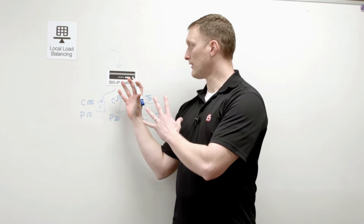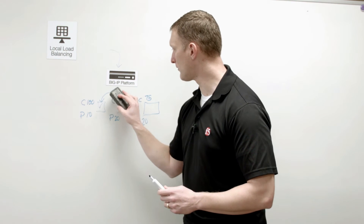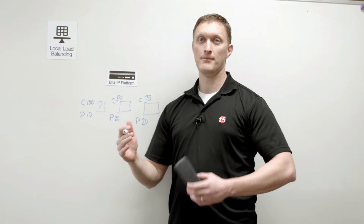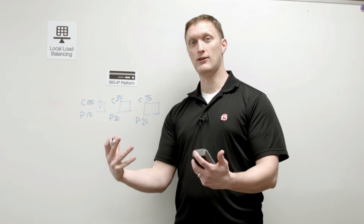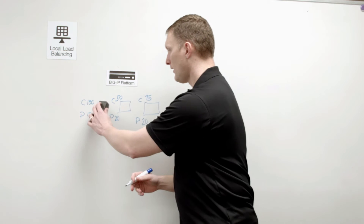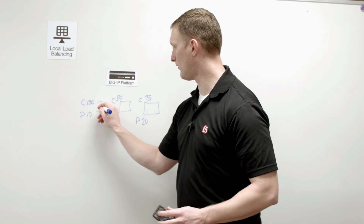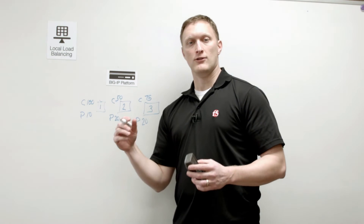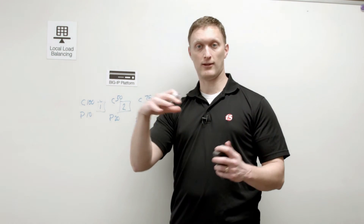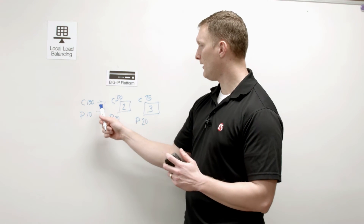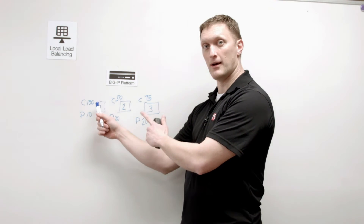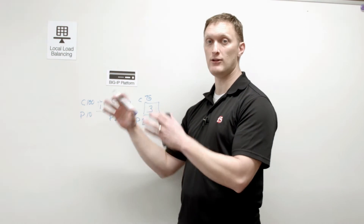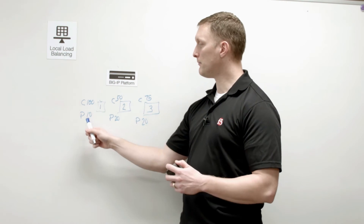So that's the least session load balancing algorithm. Now I'm going to erase this and we're going to look at ratio sessions. Ratio sessions is very similar to least sessions, except you need to put ratios on each of your servers. Let's keep it simple: one, two, and three. Much like the ratio load balancing we've discussed before — where it looked at the connection number and balanced according to the ratio — this one balances using that ratio algorithm but looks at the persistence table.